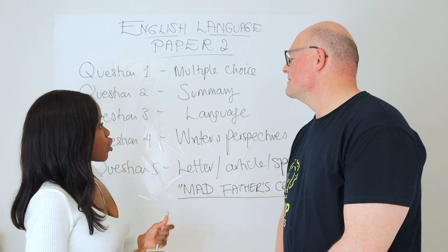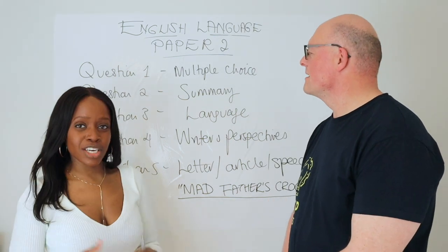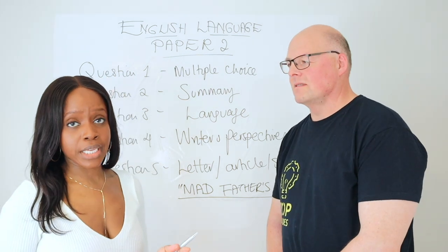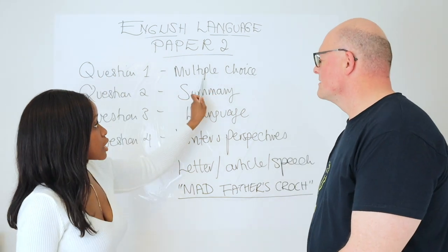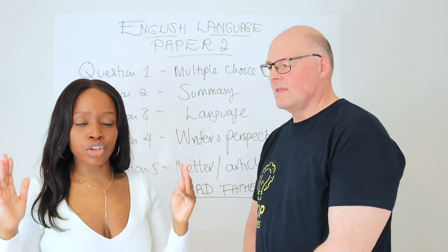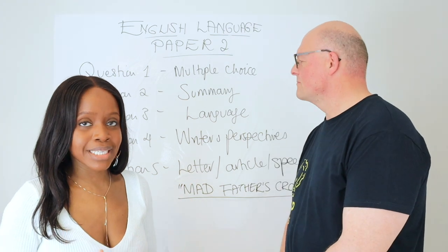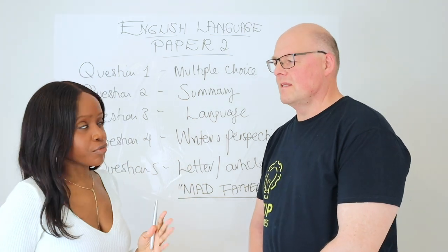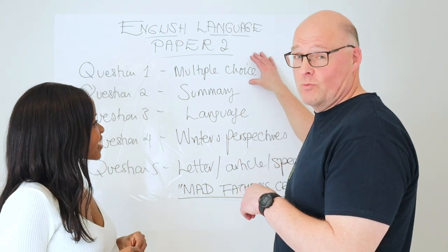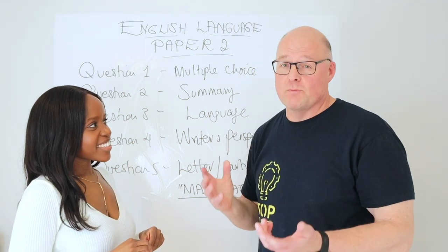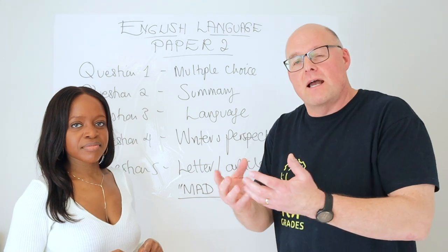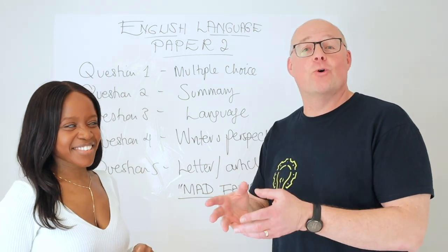Let's go over the Paper 2 structure. Question 1 is actually quite straightforward — it's a multiple choice question, usually looking at Source A. When answering, just make sure you don't look at the wrong line numbers, and keep your answer to just five minutes before moving on. I completely agree — I don't stress about question 1, because just like in Paper 1, the average mark is 3.5, so nearly everybody gets all the marks. Just settle into the exam, relax and enjoy.